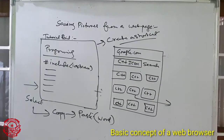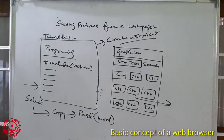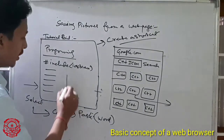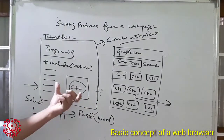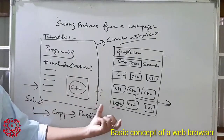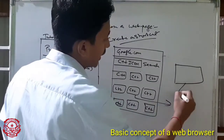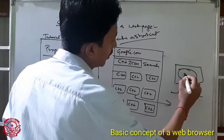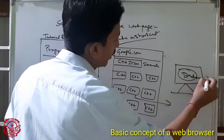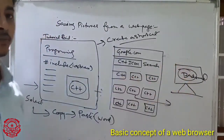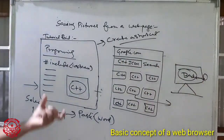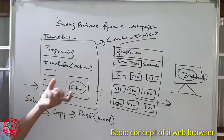Next one is to use a web page picture as the desktop background. Right-click the image on the web page and then click the set as background option. For example, if you want to select this C++ icon and you like this picture, you want to create this picture as your desktop background — you just click on this image and select set as background.